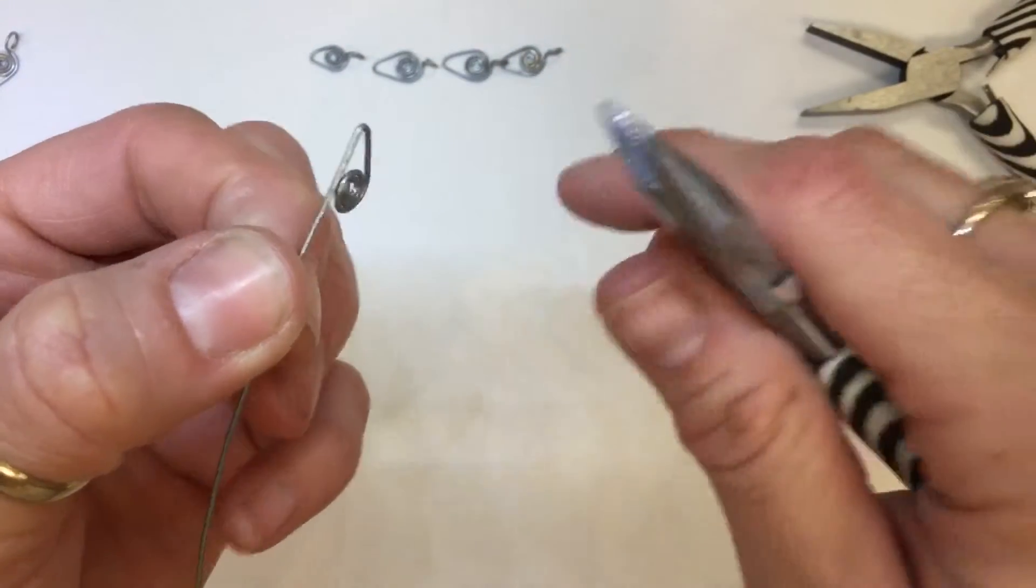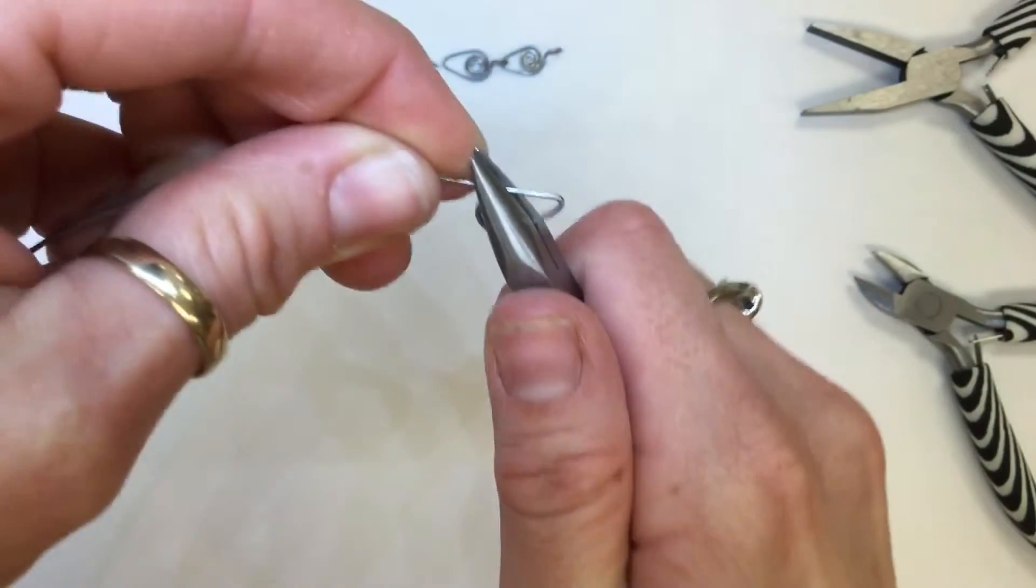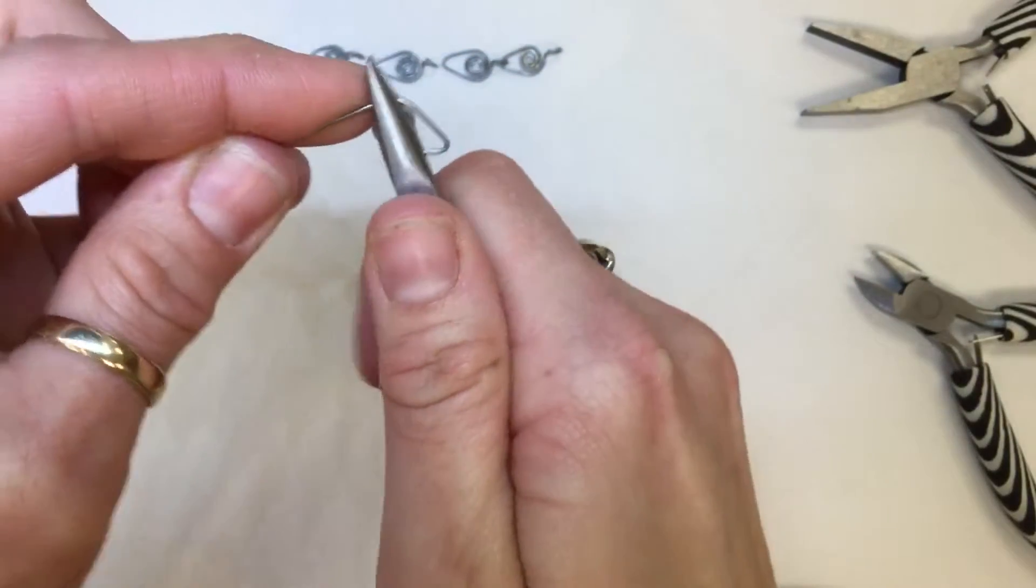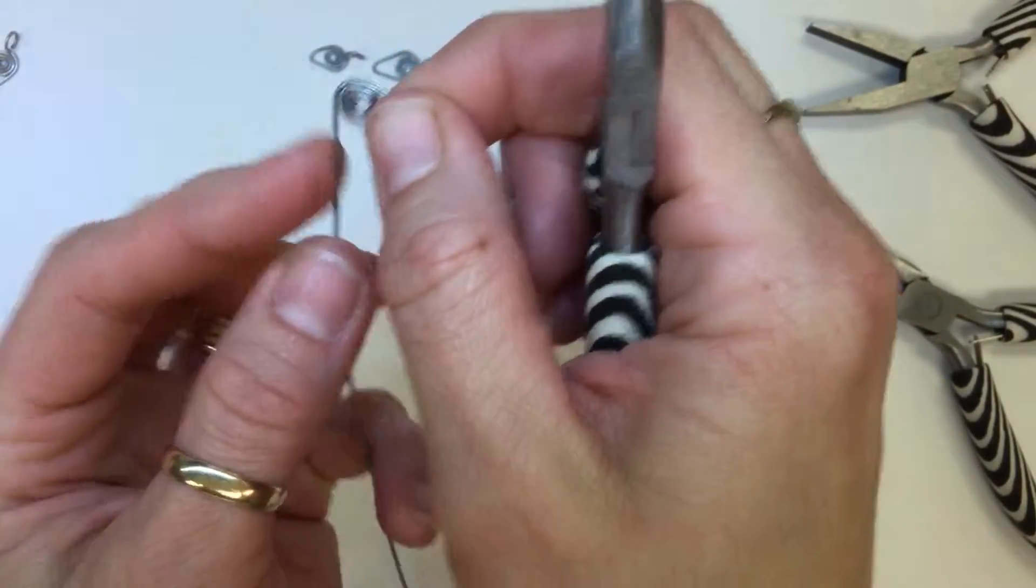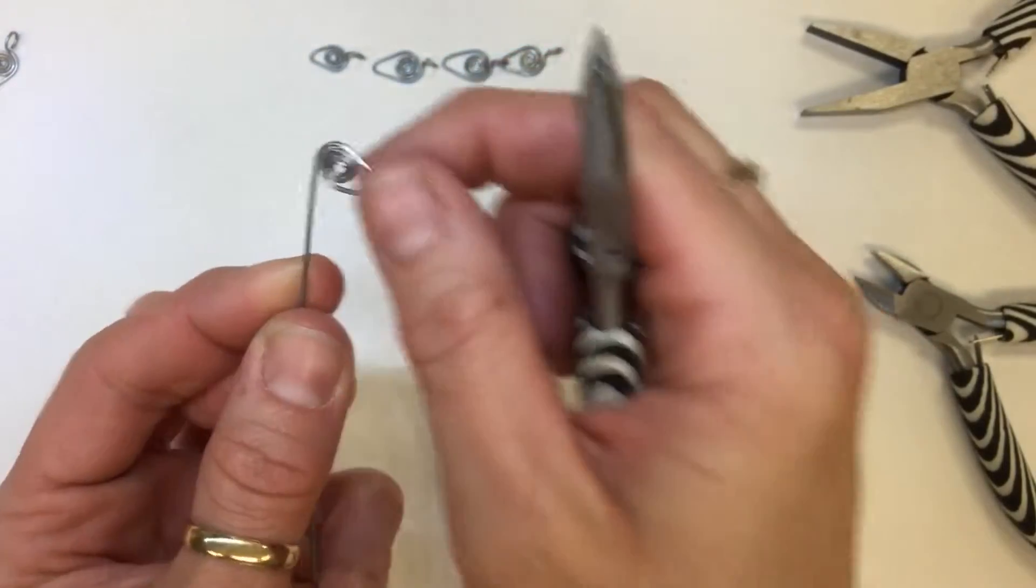And we're going to spiral around. You want it to go just a little past straight. It kind of looks like a duck.